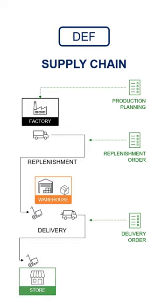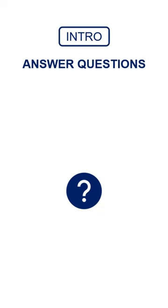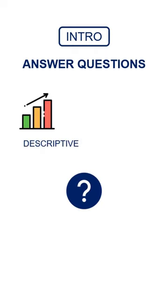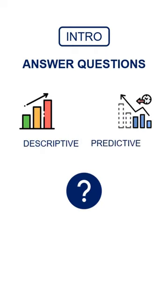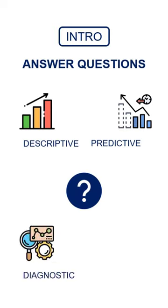How can you use data to answer key questions? What happened? — Descriptive analytics. What can happen? — Predictive analytics. Why did these events happen? — Diagnostic analytics. What should we do? — Prescriptive analytics.